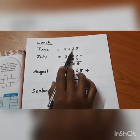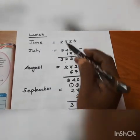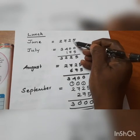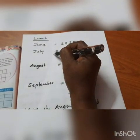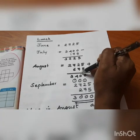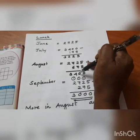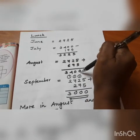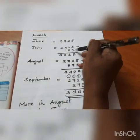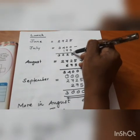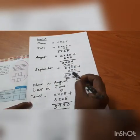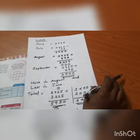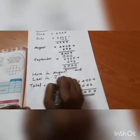Once more: June is 2725. August depends on June — 2725 plus 675 equals 3400. In July, 175 less than 3400 equals 3225. In September, 275 more than June equals 3000. Which month is more than August and less than June?